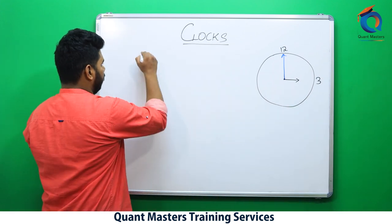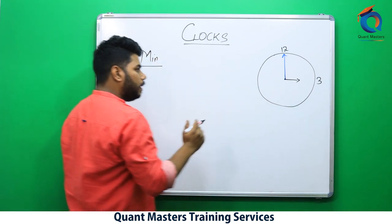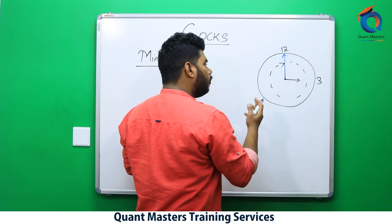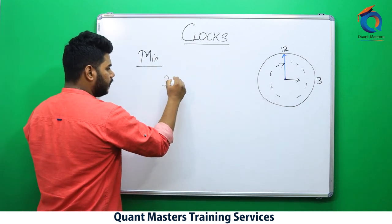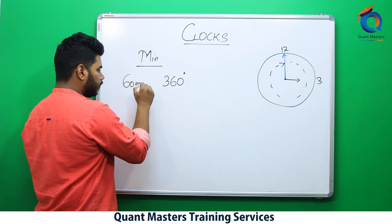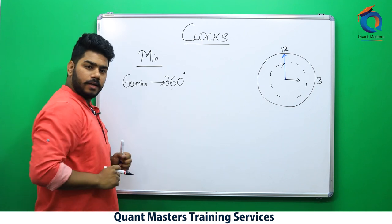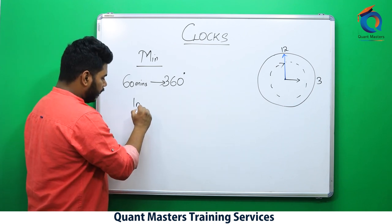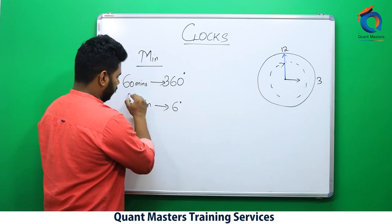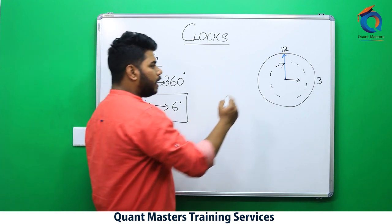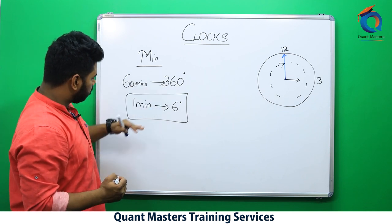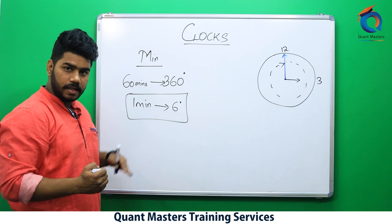Now if I talk about the minute hand — minute hand to cover 360 degrees, how many minutes will it take? The minute hand will take 60 minutes. So in 60 minutes it covers 360 degrees, which means in one minute it covers 360 divided by 60, that is 6 degrees. The minute hand in one minute covers 6 degrees.